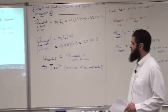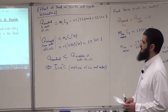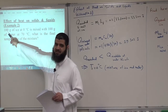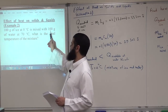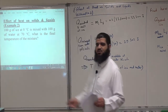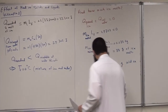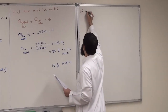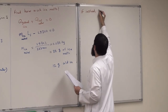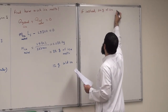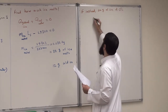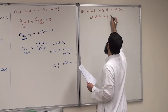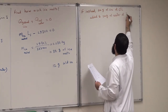Let me elaborate further and change the question. Instead of 100 grams of water, we now have 200 grams of water at 70 degrees C, mixed with the same 100 grams of ice at 0 degrees C. What will be the final temperature? Let's work this out on the side.